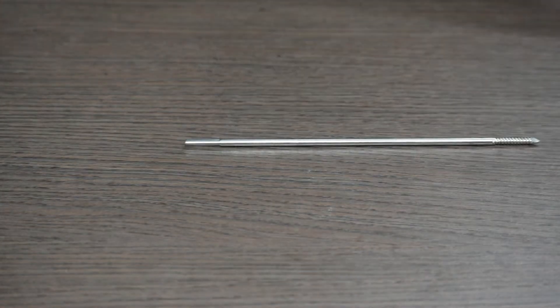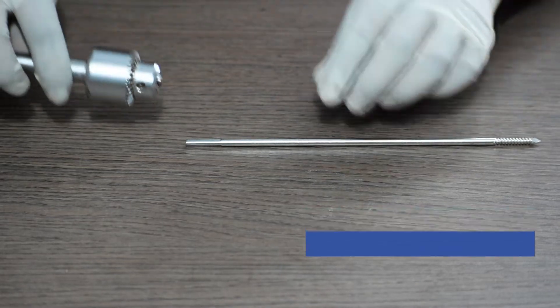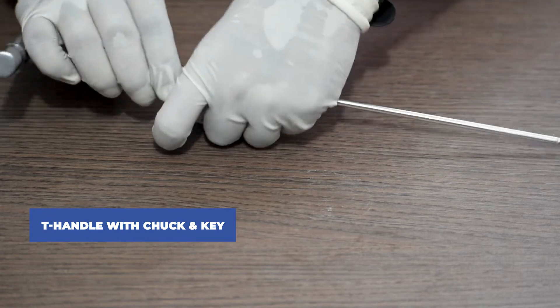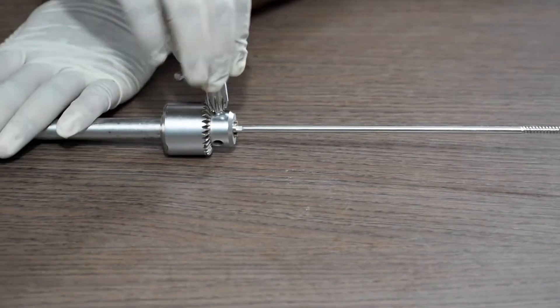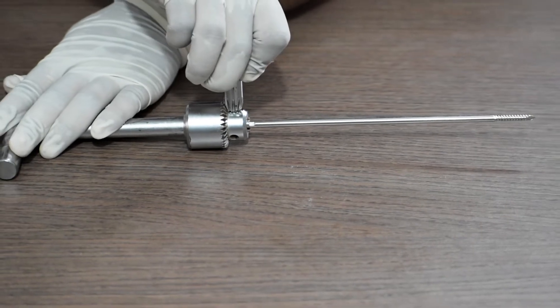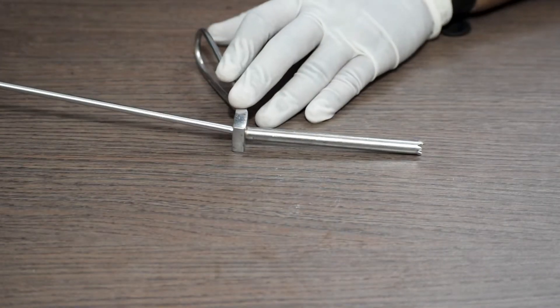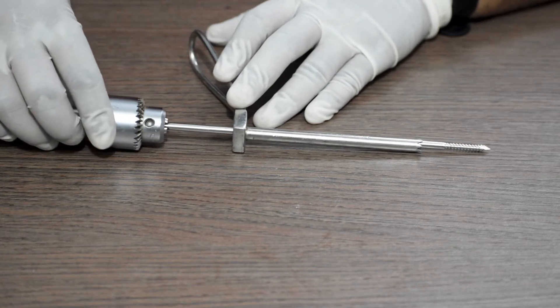And then we will take a 4.5 mm sand spin. We will attach the 4.5 mm sand spin in the T-handle with chuck, and then use the key to tighten this sand spin in the T-handle. Thereafter, we will take the sand spin and insert it through the protection sleeve.